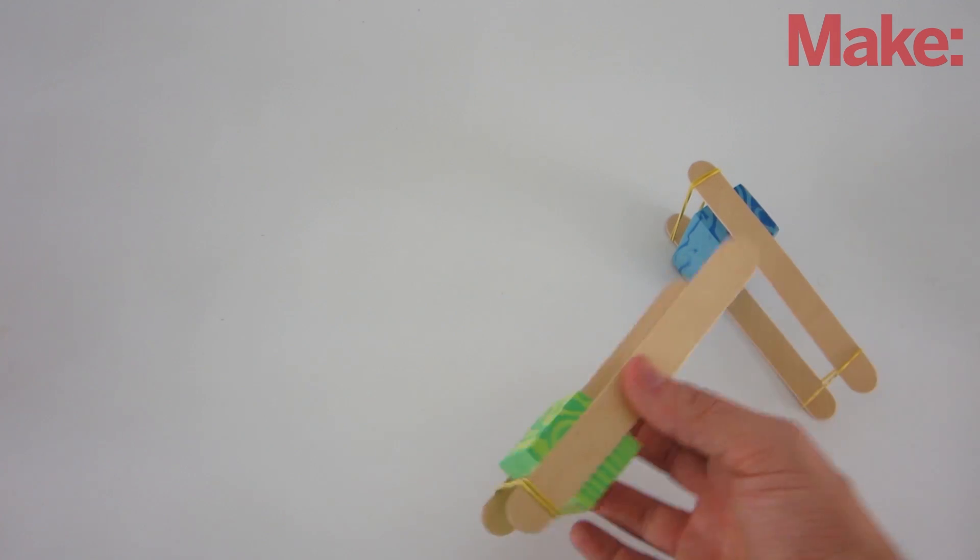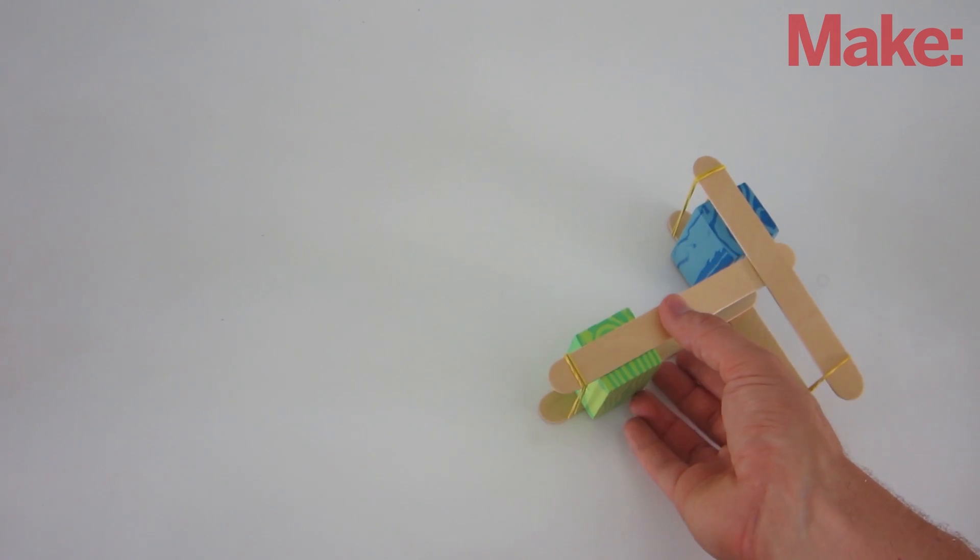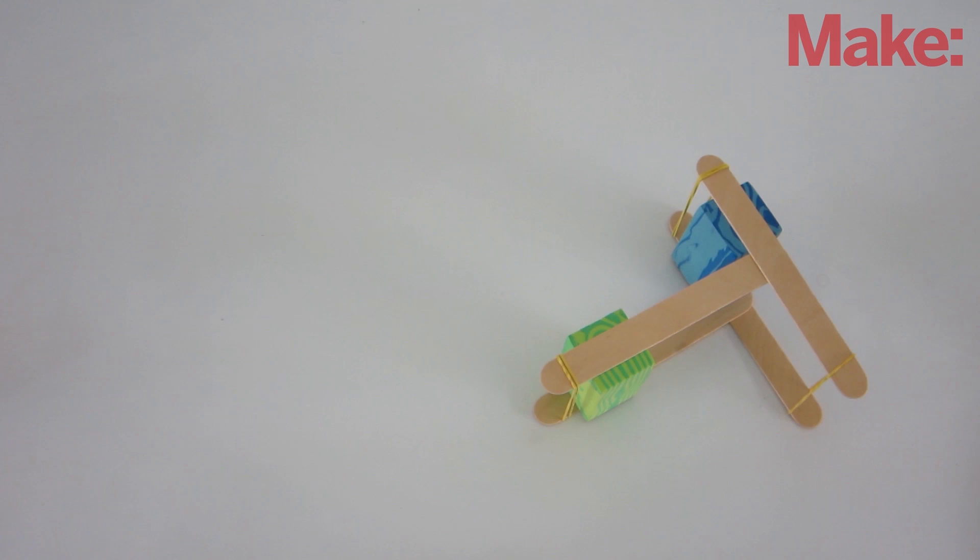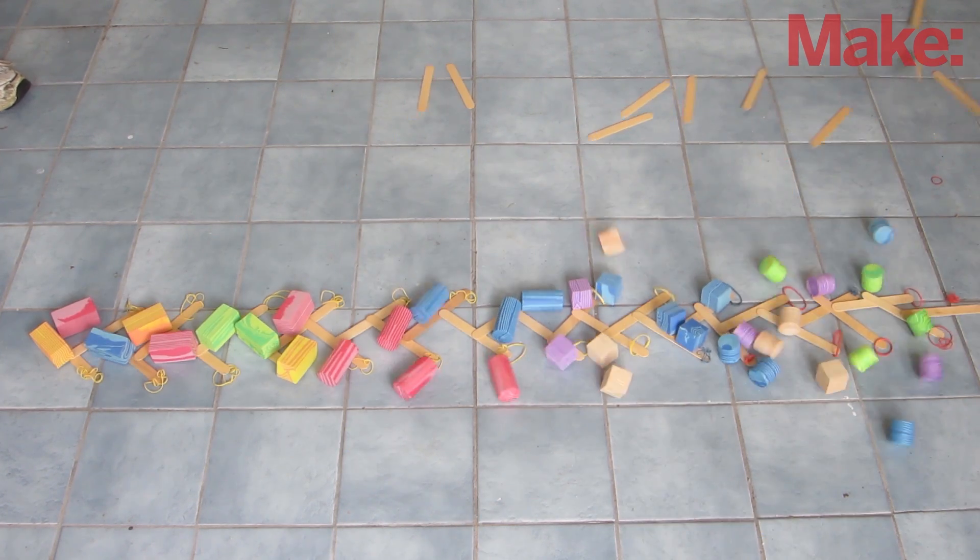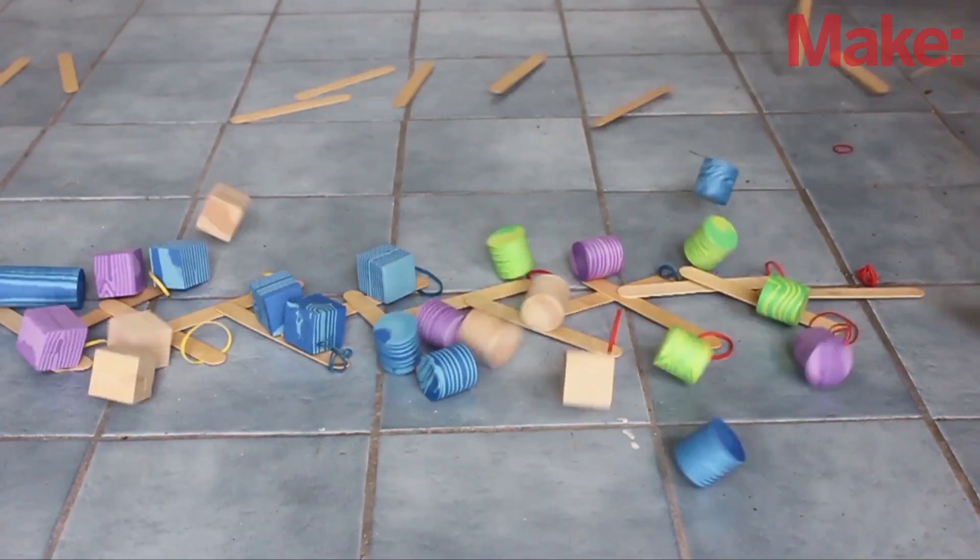To hold the sticks together, the free end is inserted between another set of clever levers. Continue adding levers until you have a long chain. You can even add props on top of the levers that will be thrown into the air.